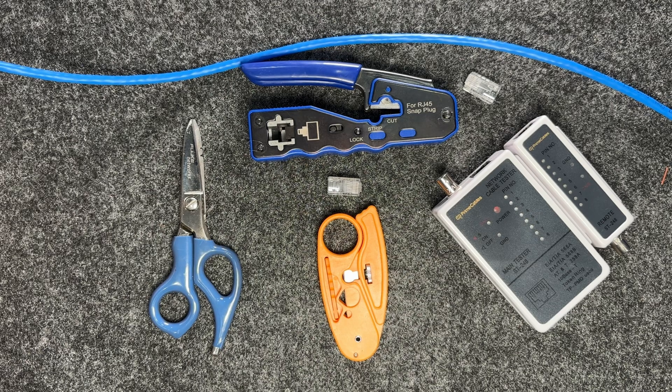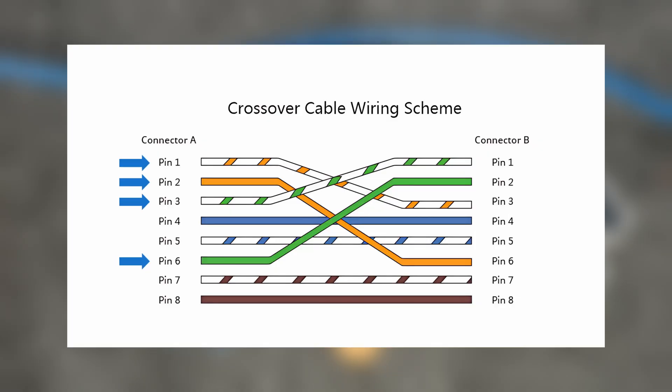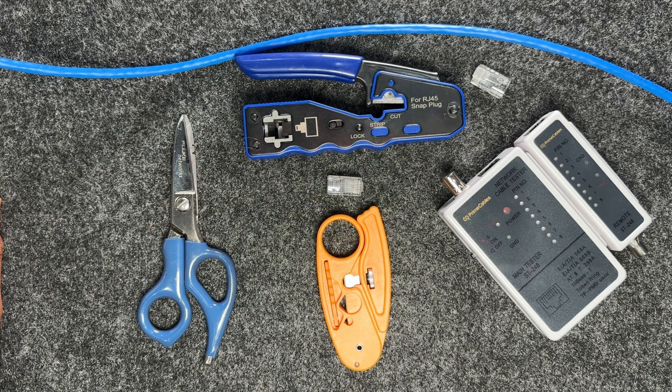By using two different schemes, the pairs won't line up. Pairs number one, two, three, and six on the A scheme will be crossed over. Pin one crosses to pin three, pin two crosses to pin six, pin three crosses to pin one, and pin six crosses to pin two on the opposite side.